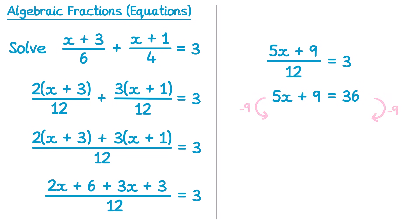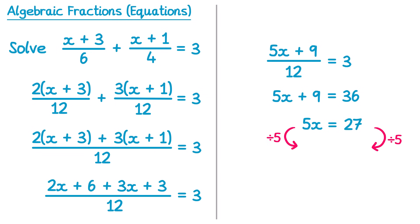Then just subtract 9 from both sides — this will give you 5x equals 27. And then divide both sides by 5, and this gives you x equals 27 divided by 5, which is 5.4. So the solution to this equation is 5.4.